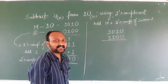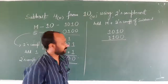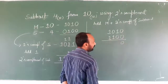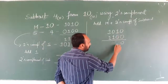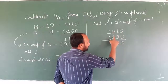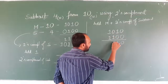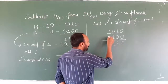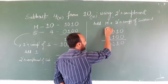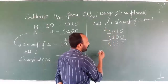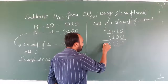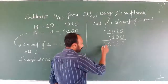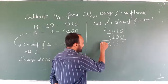Now let us perform binary addition. 0 plus 0 is 0. 1 plus 0 is 1. 0 plus 1 is 1. 1 plus 1 is 0, and we need to carry 1 to the next higher column. But there are no other higher columns present, so we will be considering that 1 here — the bit 1 is extra.